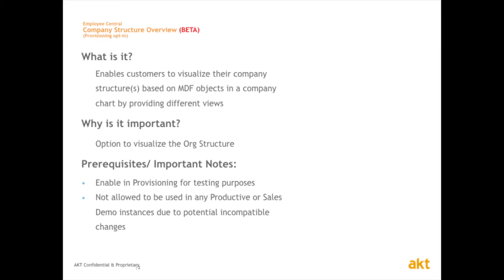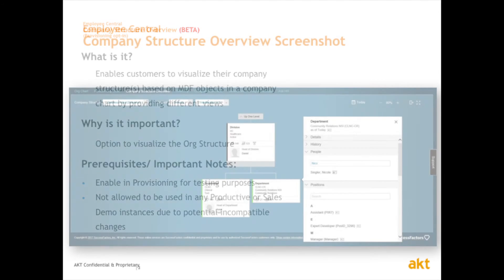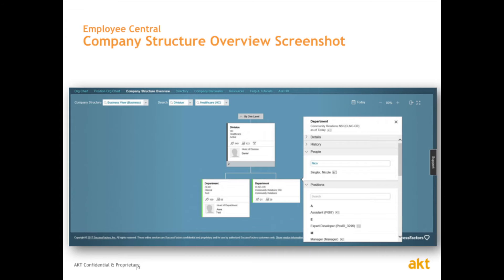As long as they're MDF objects, this will be presented on this tool. As you can see, it's right near the position org chart. Near the org chart, you have a new tab called Company Structure Overview, in which you select the structure you want to present, enter the starting point of this company structure, and then you'll be able to navigate as you've done for the position org chart and the org chart before.